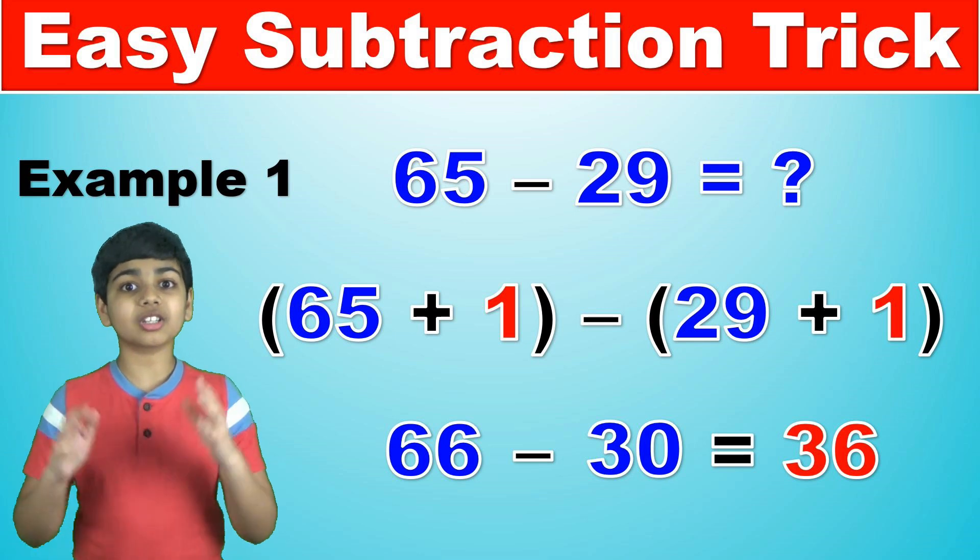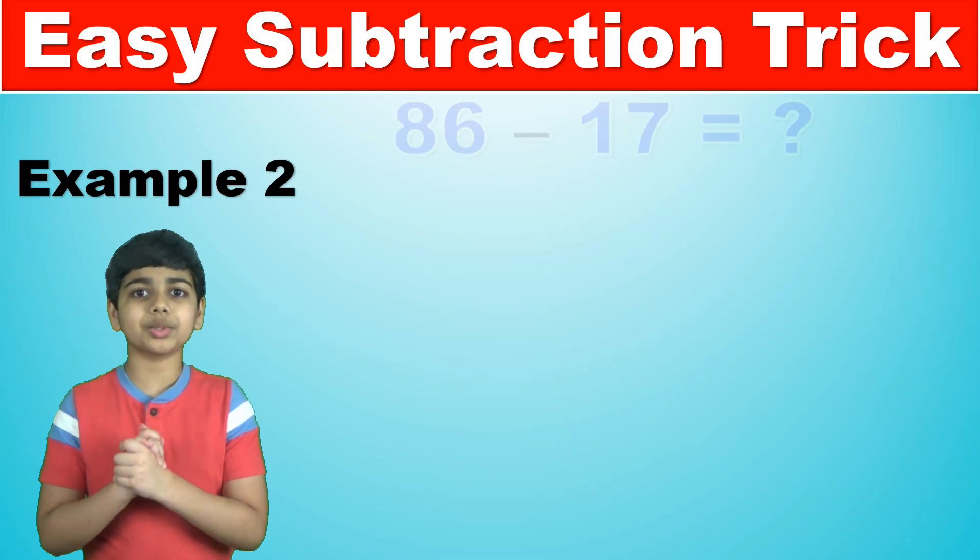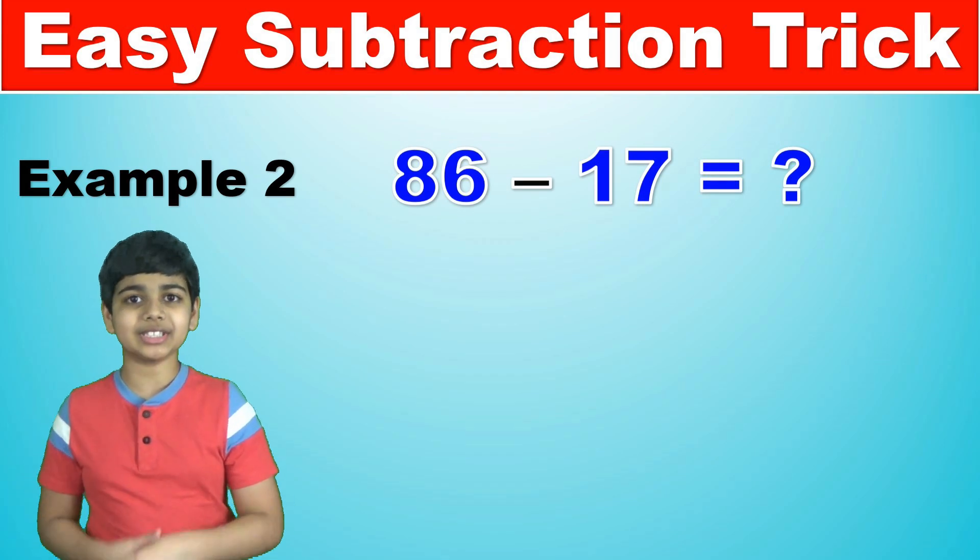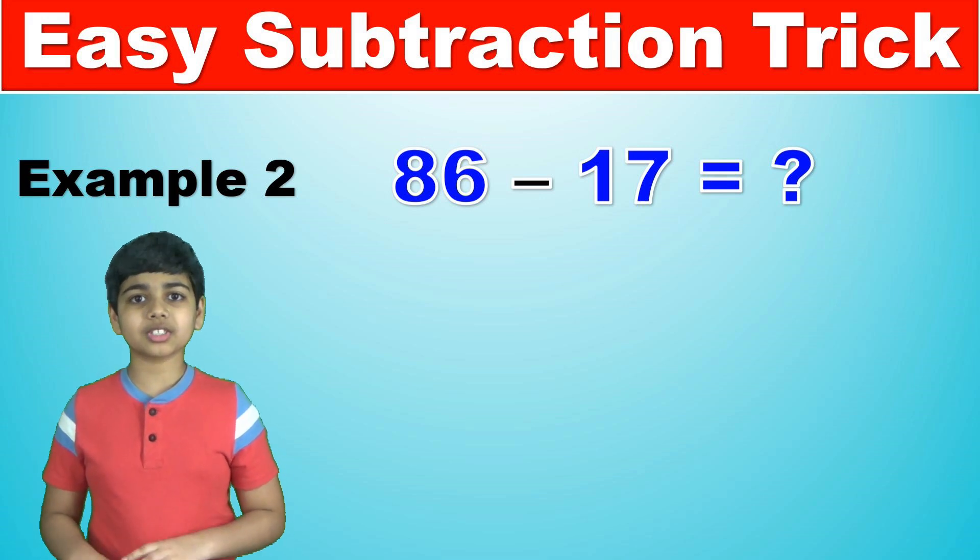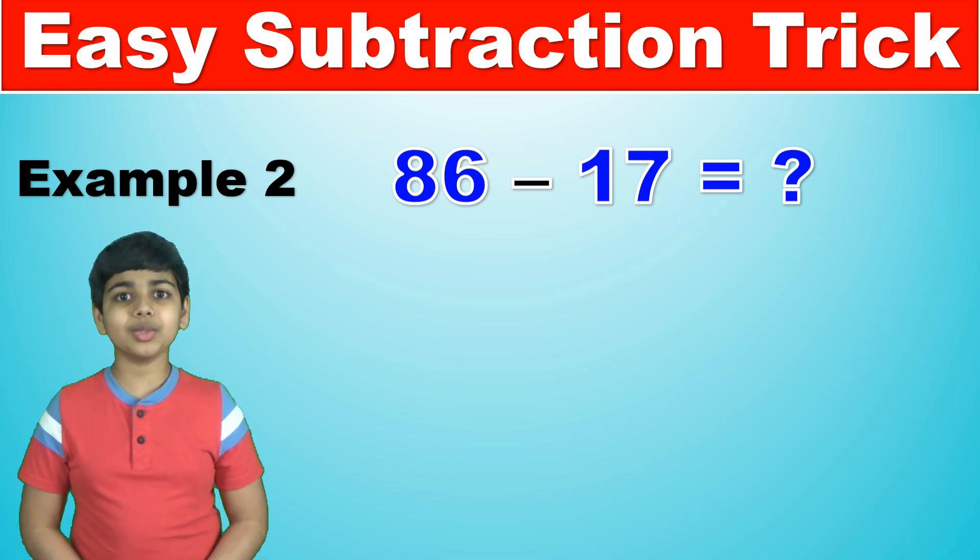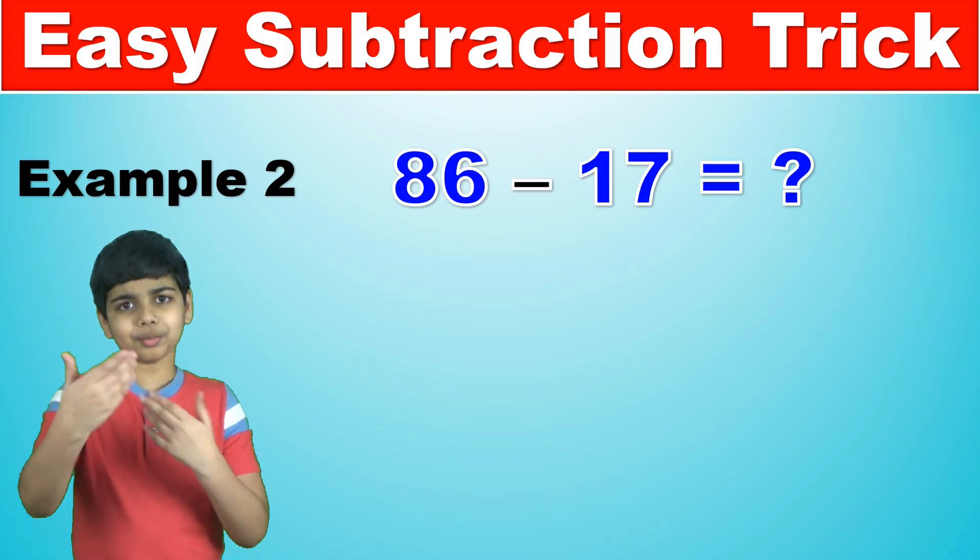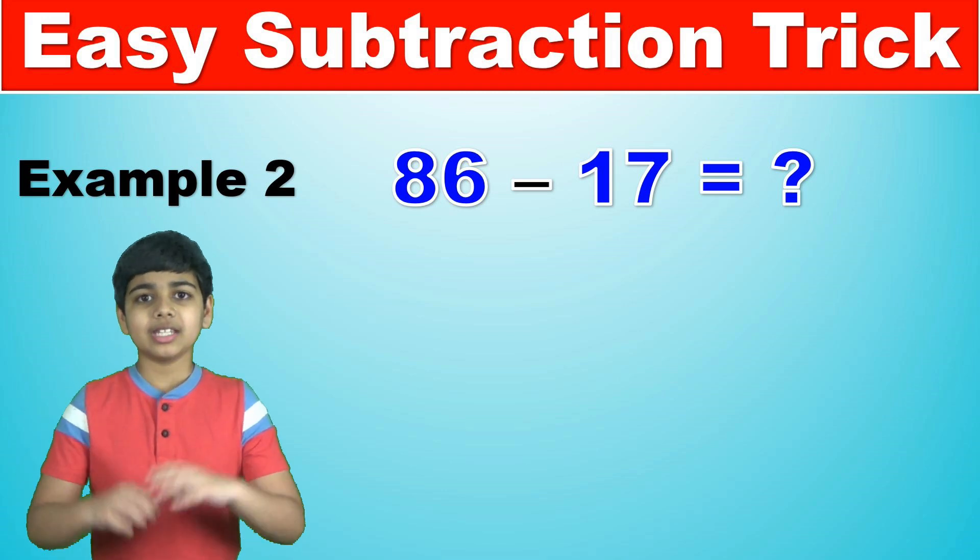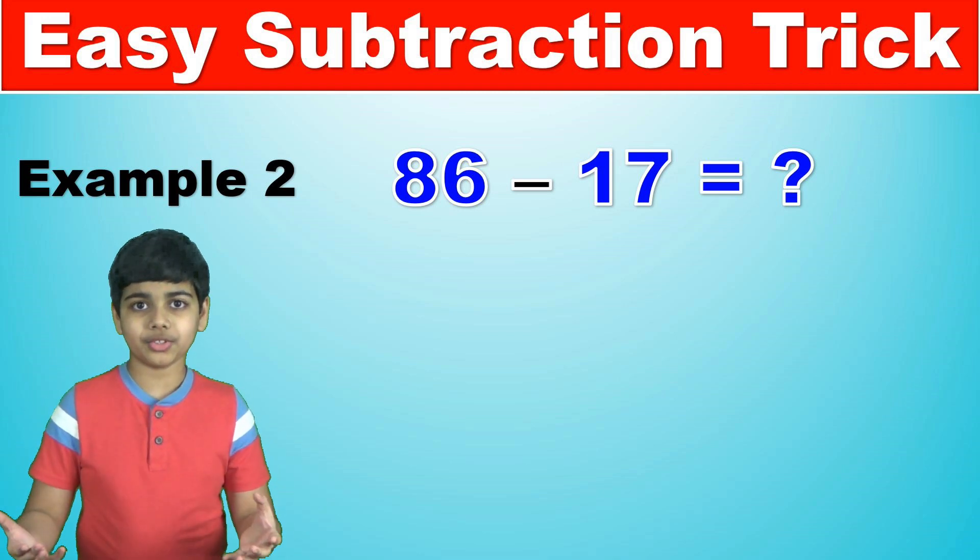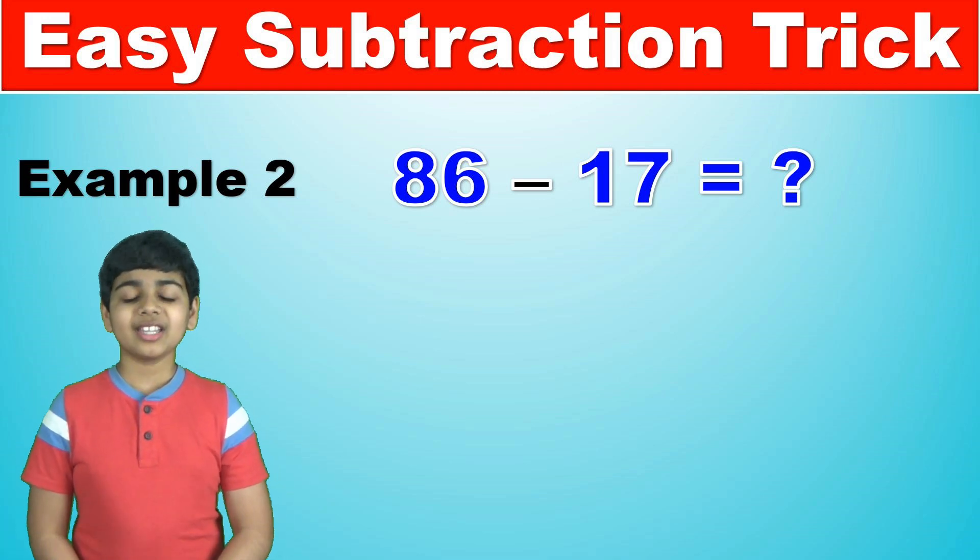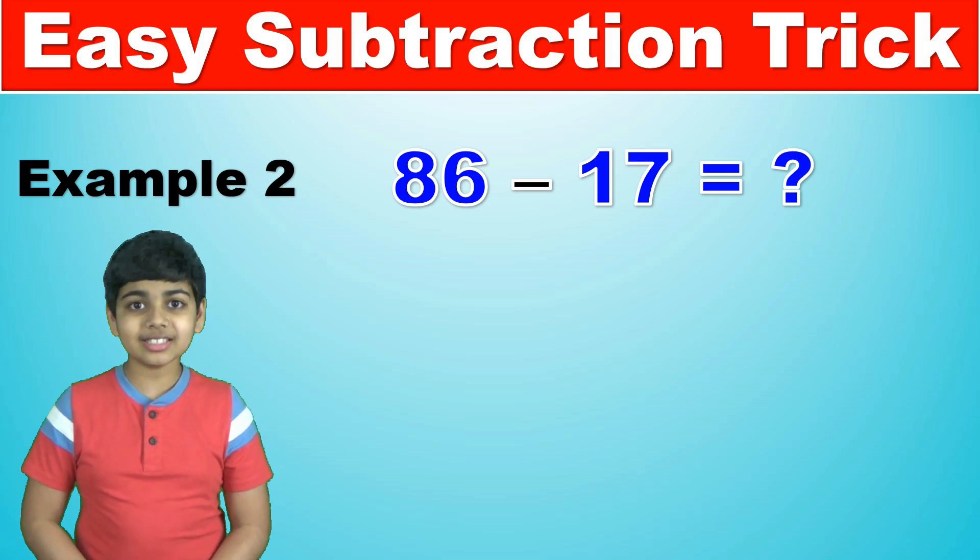And we'll go through a couple more cases to get a feel for it. Let's take the example of 86 minus 17. Now, again, as we can see, we're going to focus on the number 17. And we're going to find the nearest multiple of 10. You should probably know what I mean by this. It's just the numbers 10, 20, 30, 40, 50, and so on and so forth. So if we take a look at 17, the nearest multiple of 10 is 20.